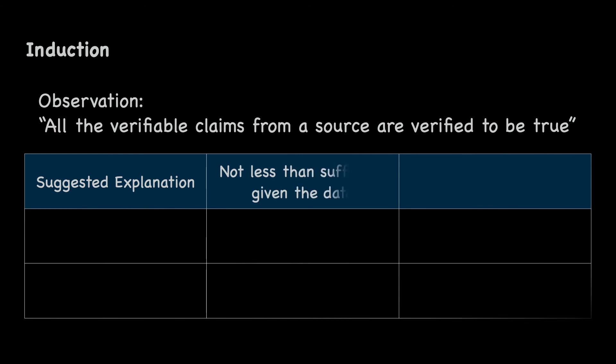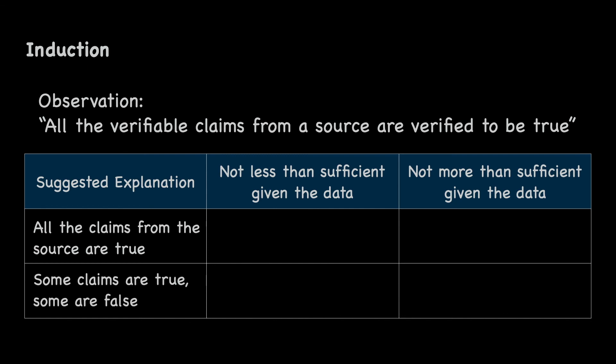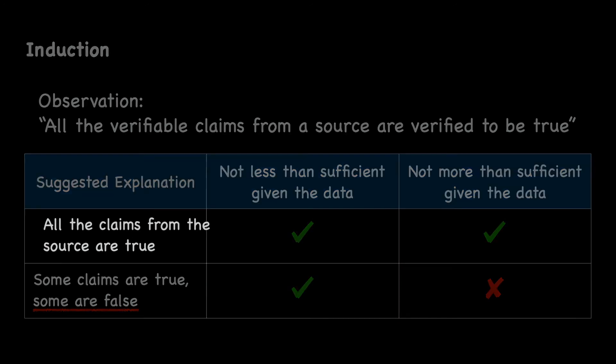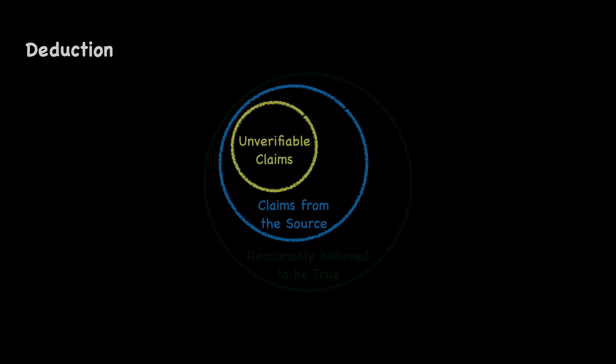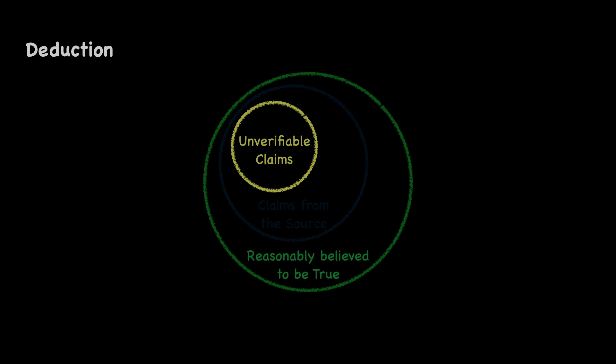We start with induction following the observation that all the verifiable claims from a source are verified to be true. We offer two possible explanations: all the claims from the source are true, and some claims from the source are true and some are false. Both explanations sufficiently account for all the data, but the second explanation, with its second part, is more than sufficient. It is superfluous. Thus, the first explanation is the most reasonable one. Now, onto deduction using a Venn diagram. If it is reasonable to believe that all the claims from a source are true, and all the unverifiable claims are from that same source, then it is reasonable to believe that all the unverifiable claims are true.